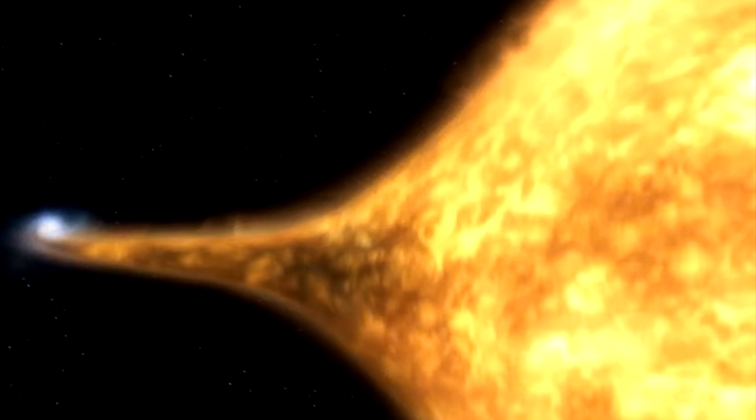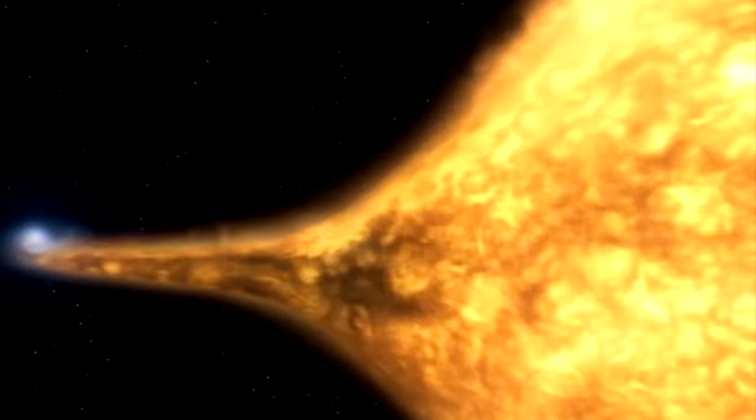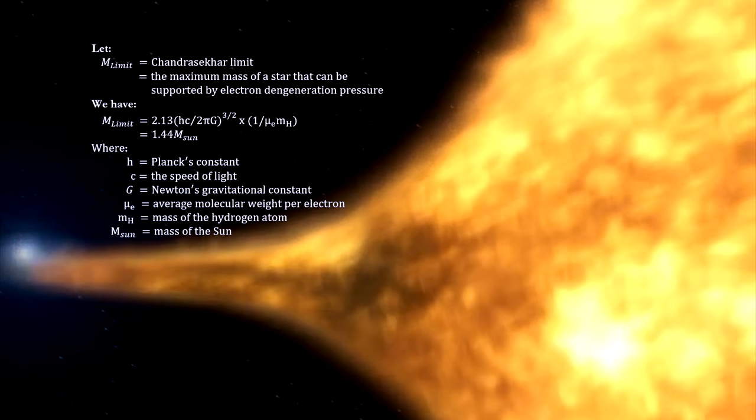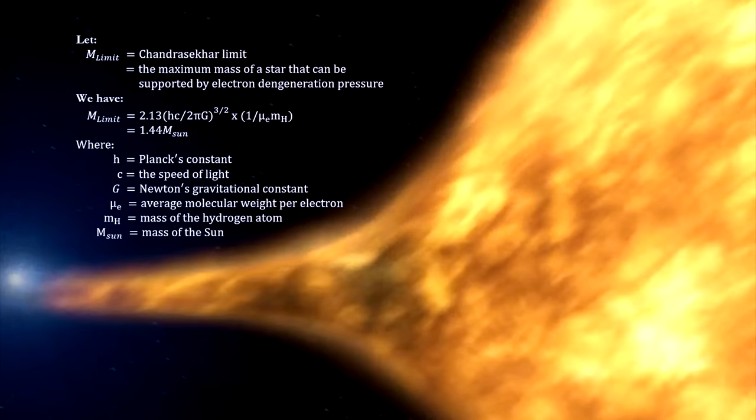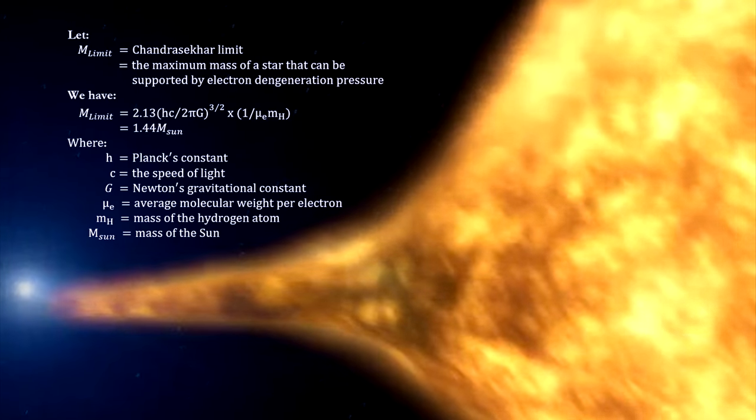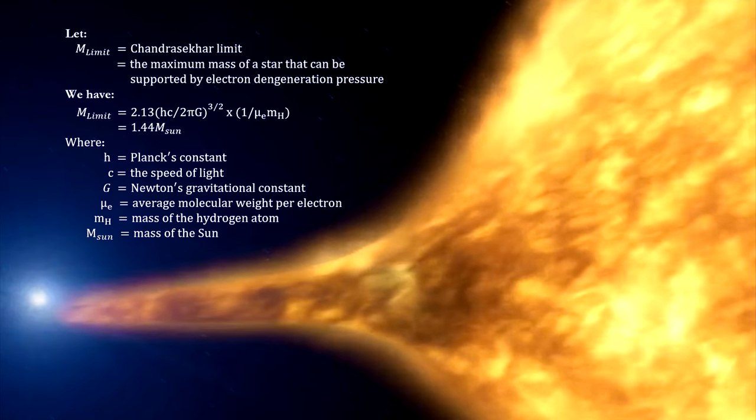3. The mass of the dwarf star increases. 4. Once the mass of the smaller star reaches a critical level, its ability to hold off collapsing under the force of gravity comes to an end.